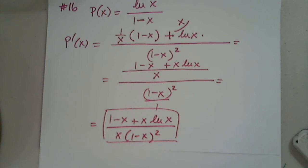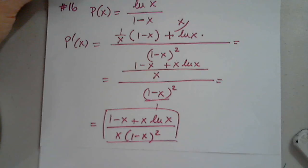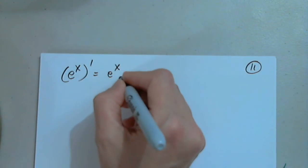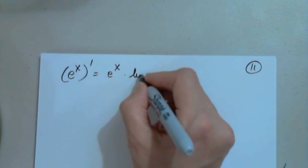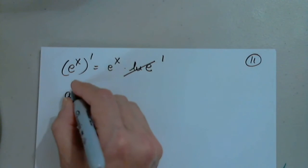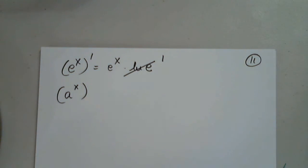Now let's talk about when the base of the log is not e — so we don't have natural log. Similar to how e to the x prime is e to the x times natural log e, but natural log e equals 1 so we drop it. When we have a to the x, we need to account for that.